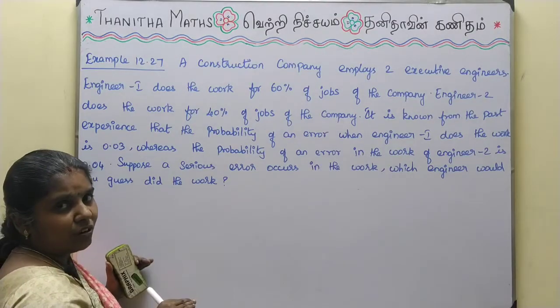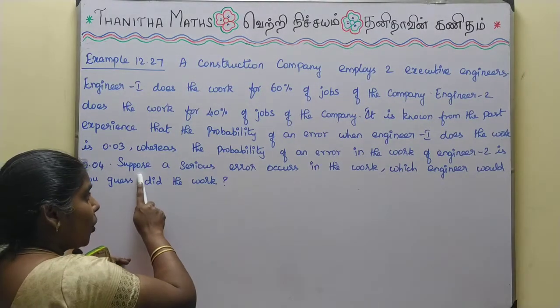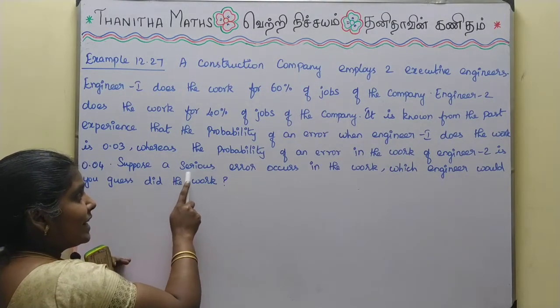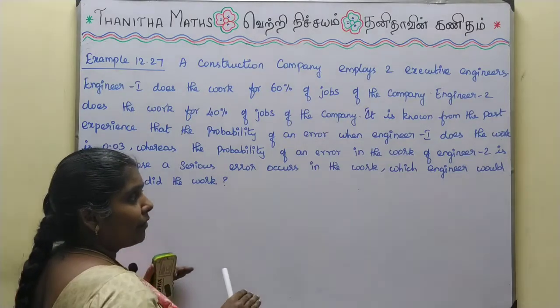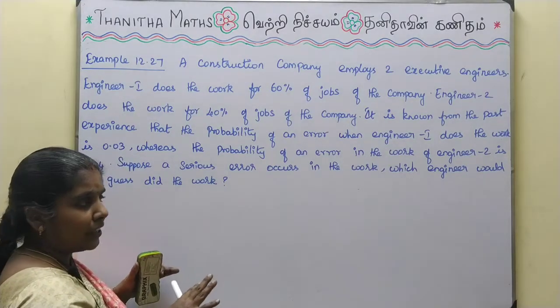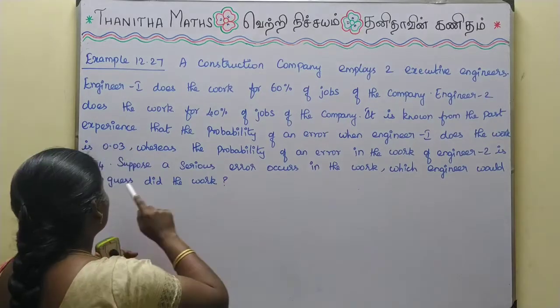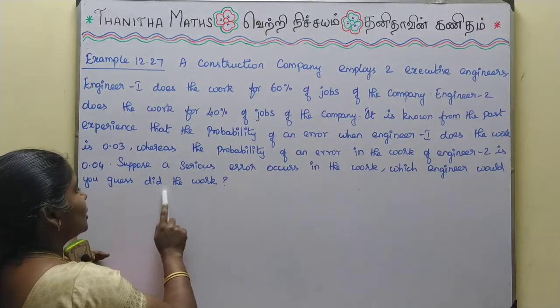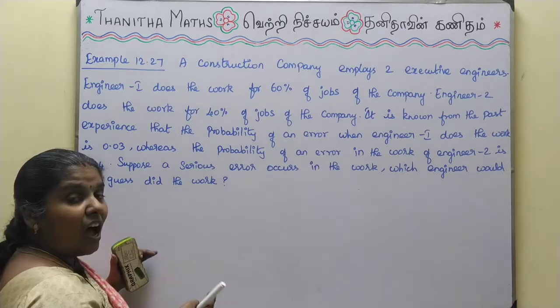If Engineer 2 does the work, the probability of an error is 0.04, that is 4 percent. Now, suppose a serious error occurs in the work — which engineer would you guess did the work?